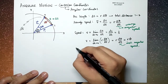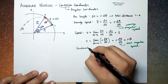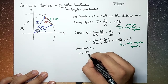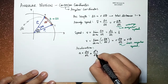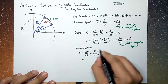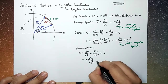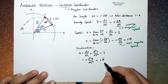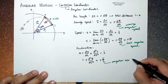Now, acceleration is equal to the derivative of speed with respect to time, which is also the second derivative of s — or s-double-dot. You can also write this as r times the second derivative of theta with respect to time, or r times theta-double-dot. We call theta-double-dot the angular acceleration.